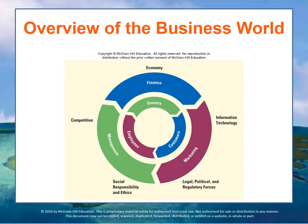In this lecture, let's dive a little deeper and look at the components of a business and how the business operates. This figure represents an overview of the business world. Note that owners, employees, and customers are the main stakeholders, located in the center of the figure. As you move outward, you will see the functions of the business organization, such as finance, marketing, and management, then the external social and political environment in which the business operates.